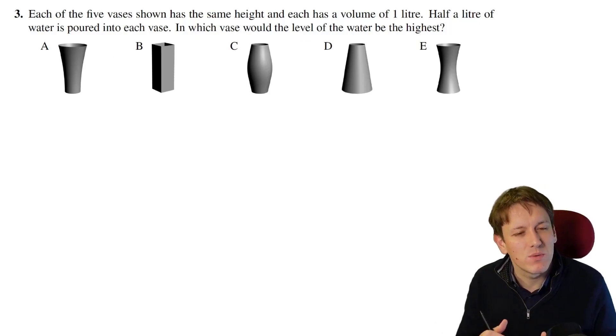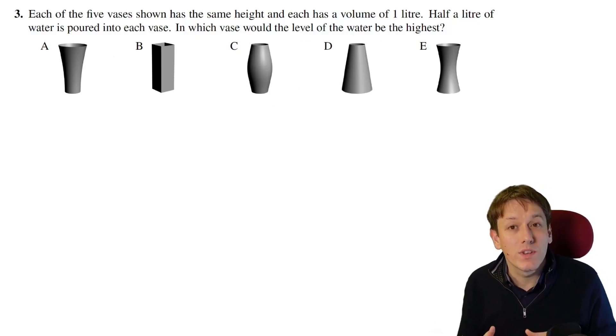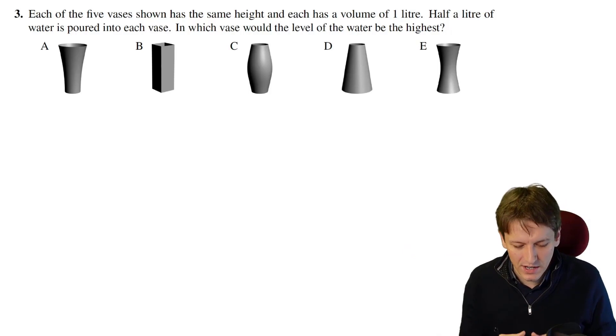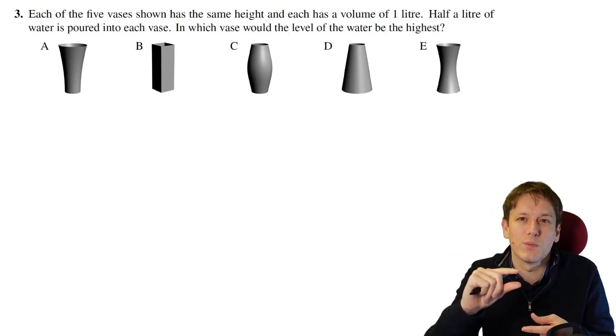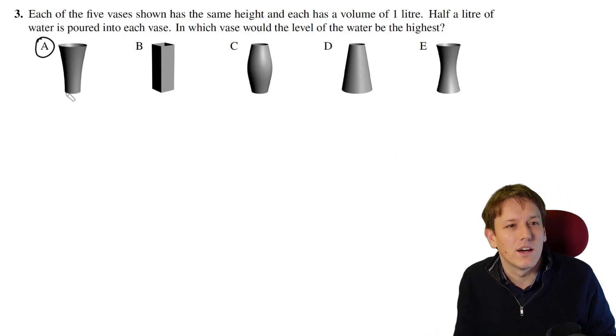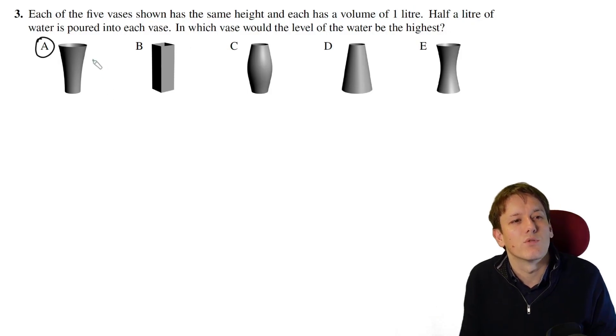If we pour the same amount of water into each of these vases, the ones that are narrowest at the bottom will fill up most quickly, because if you think of layers of water, a narrow vase has a smaller amount of water with the same height. The one that has the narrowest base here is A, so that one's going to fill up fastest. Because it says there's a volume of one litre and half a litre going in, they're all going to go half full. So we don't have to worry, for C for example, about the fact that it gets narrow again later. We're just looking at the bottom half, and it's fairly clear that A is the one that's narrowest at the bottom.